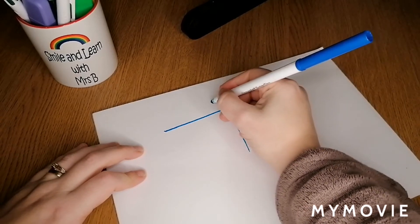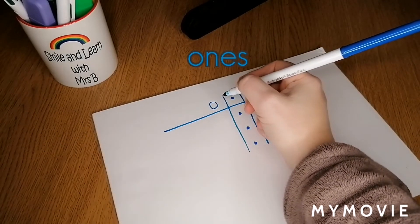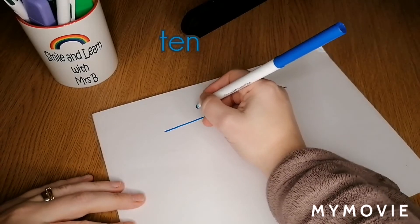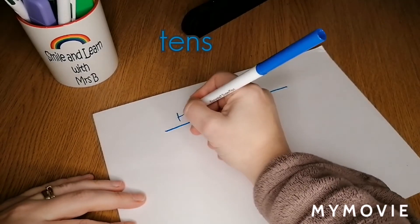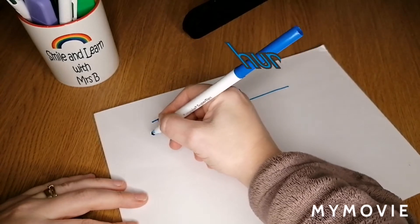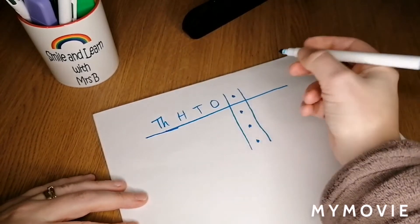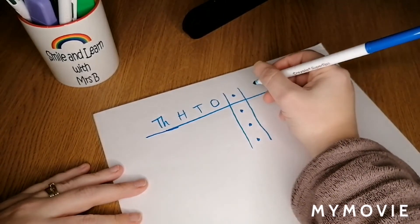...hundreds. Then we get into thousands and ten thousands, etc. Because we're going to be considering decimal numbers in another short video, we're going to concentrate now on the right side of the decimal, where...